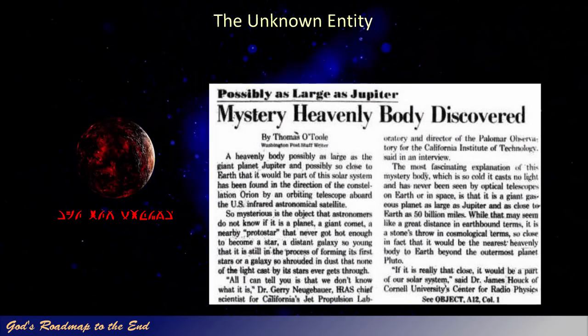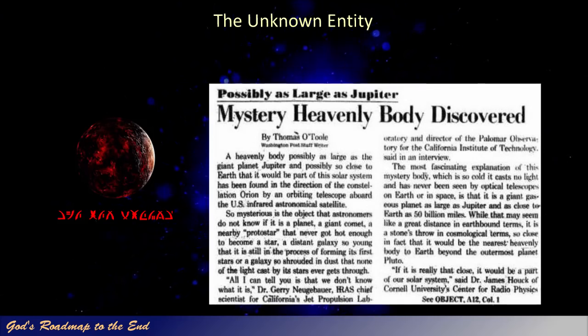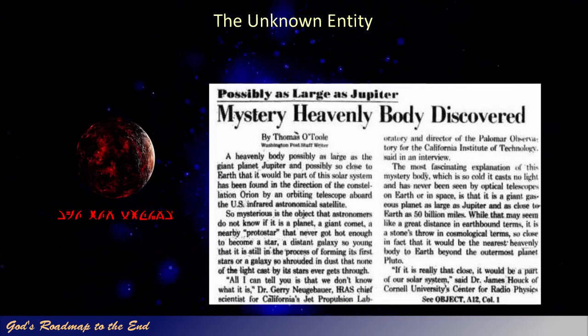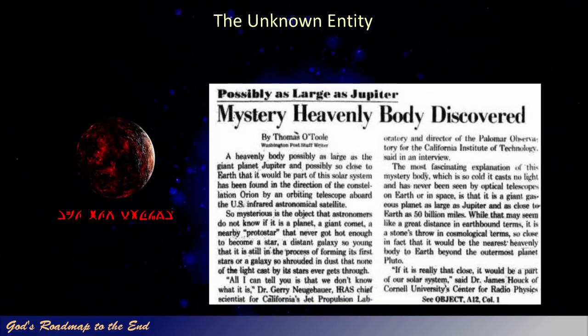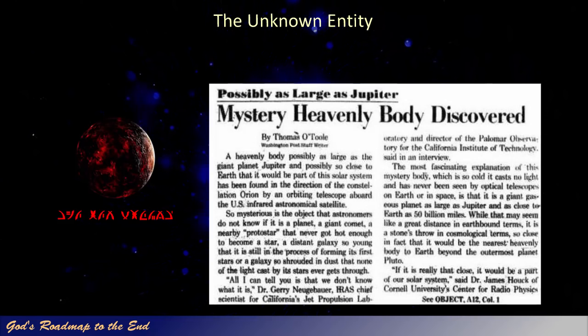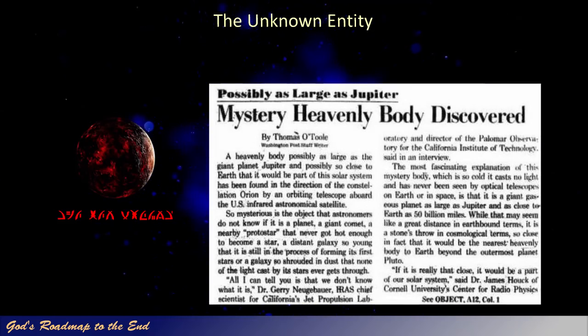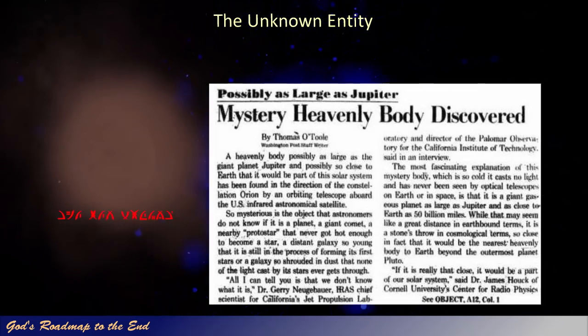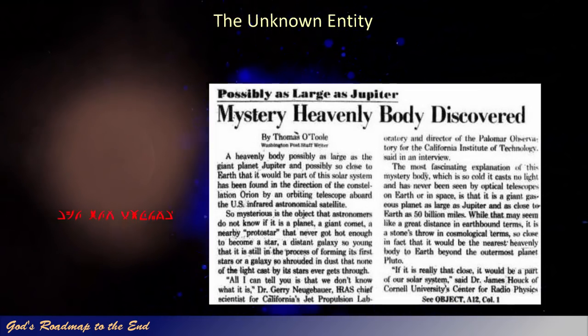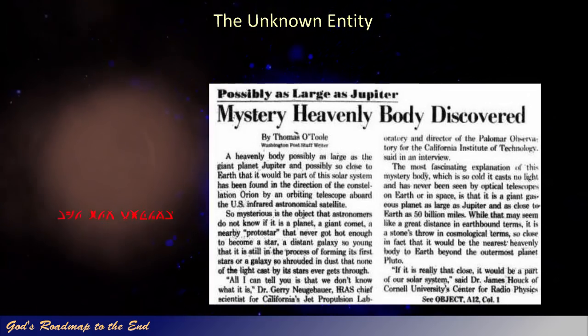The article describes the discovery of a planet or planetary system that could possibly be part of our solar system. It was discovered by a telescope on the United States infrared astronomical satellite. It is described as extremely cold, and those who discovered it could not tell what exactly it was, as it was apparently shrouded in a dense cloud of dust. This entity reflects no light and cannot be viewed with any optical telescopes. The object is described as a possible gas giant that could be as large as Jupiter, and in 1983 was estimated to be about 50 billion miles away from Earth.